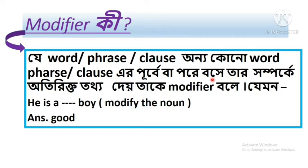What is a modifier? The word that sits before or after a noun, phrase, or clause and gives additional information about that noun is called a modifier. For example: 'He is a good boy.' Here, the word 'good' is a modifier.